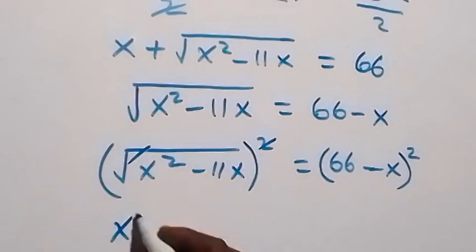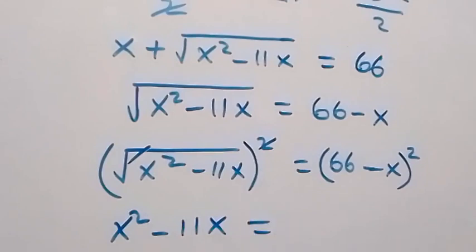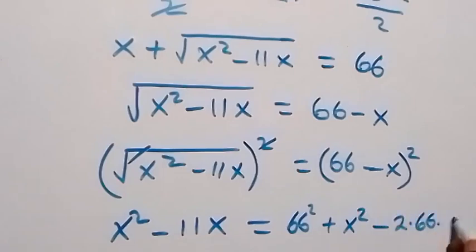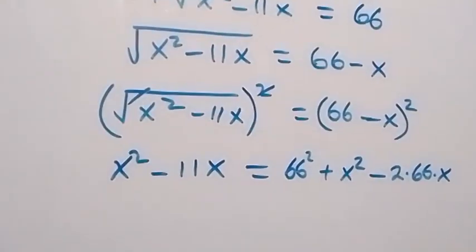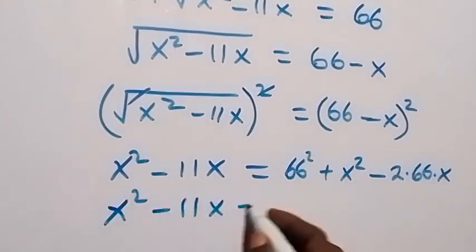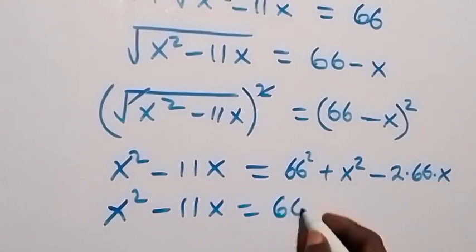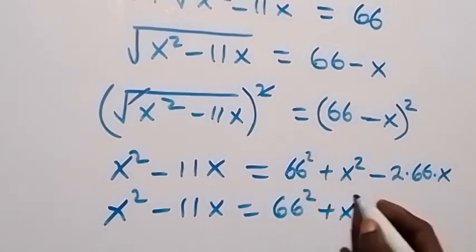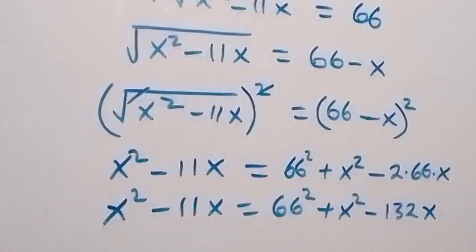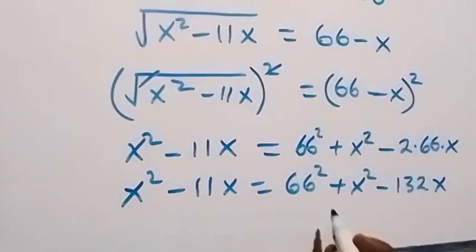The square cancels the square root on the left, giving us x squared minus 11x. Expanding the right side gives 66 squared plus x squared minus 2 times 66 times x, which is 132x. So x squared minus 11x equals 66 squared plus x squared minus 132x.